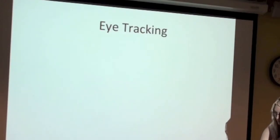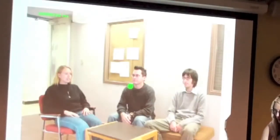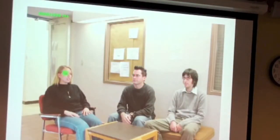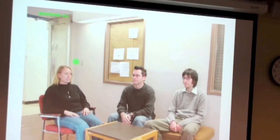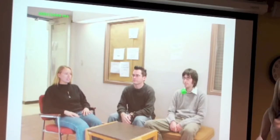Eye tracking measures what people are selecting in the environment by recording where they're looking. Here's an example of what that looks like — this green dot represents someone's eye movements. They're checking out the people, then going to the background, making a lot of fixations on the eyes, face, and body. That's an example of the type of data you get from using an eye tracker.